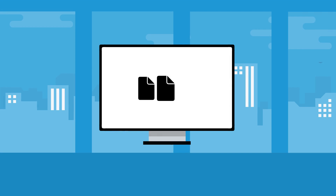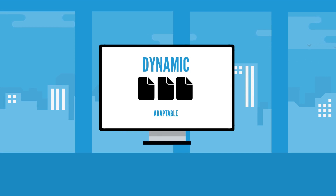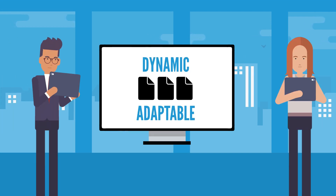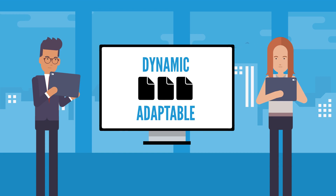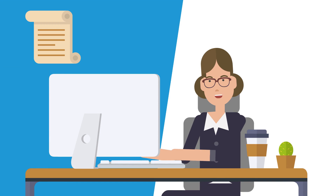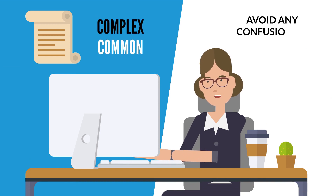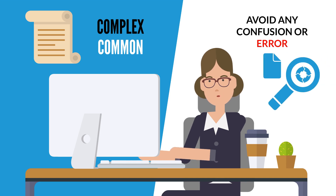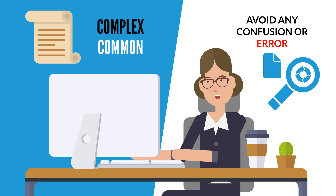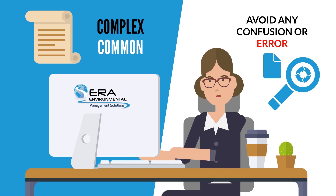The reports created through ERA's software are designed to be dynamic and adaptable. This allows for a great deal of customization, quickly accommodating your unique needs. As environmental regulations are becoming increasingly common and more complex, avoid any confusion or error in your chemical reporting and tracking processes. See how you can improve the accuracy of your chemical management with ERA Environmental. Schedule a demo today!